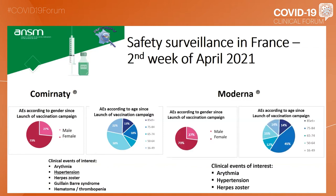Looking at the Moderna safety surveillance, most of the side effects were again noted in females. Opposite to what we saw with Comirnaty, the number of side effects was higher in patients above the age of 65. The clinical events of interest were again arrhythmia, hypertension, and herpes zoster. So you see that on the whole, those vaccines are very well tolerated with regard to short and mid-term safety.